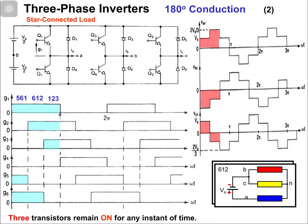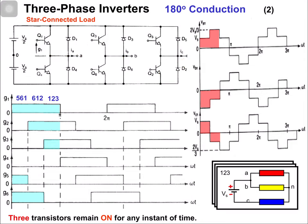In the third switching interval, switches 1, 2, and 3 are in the on state. Because of switch 1, phase A is positive. Because of switch 2, phase C is connected with the negative terminal of the source, and because of switch 3, phase B is connected with the positive terminal of the source. This is shown in the equivalent circuit.